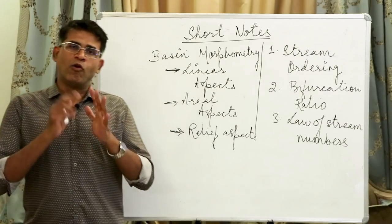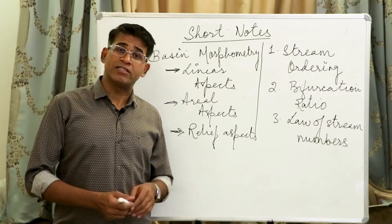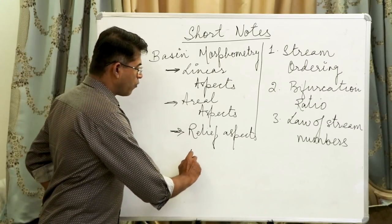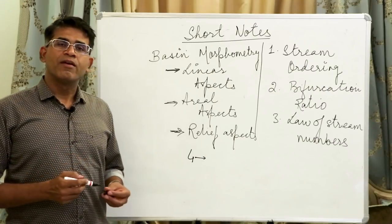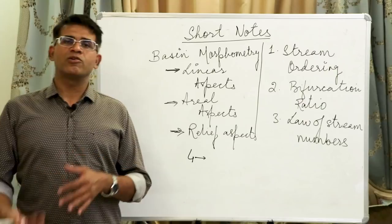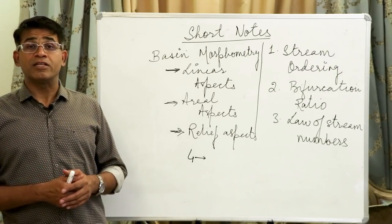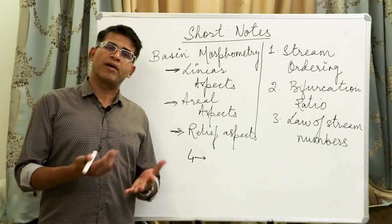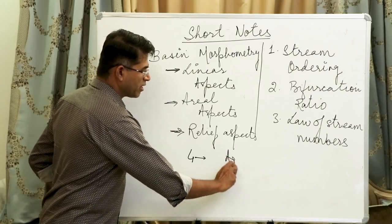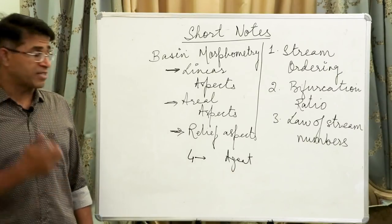There are four ways of studying any river or fluvial system. One way is understanding rivers as an agent of denudation — rivers erode, rivers deposit, and there are landforms related to erosion and deposition by rivers. So river as an agent of denudation is one type of study.